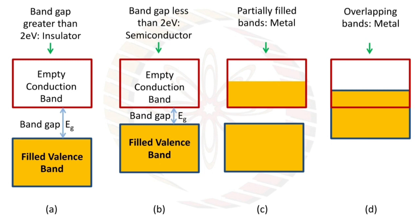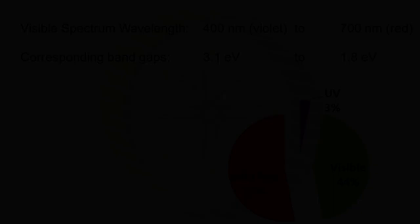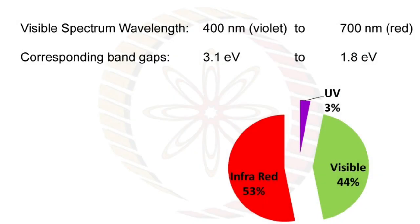Now we have to study the visible spectrum. Infrared rays occupy 53 percent, UV occupies 3 percent, and visible occupies 44 percent.